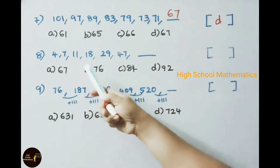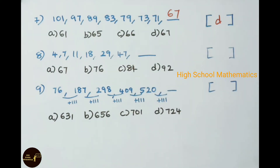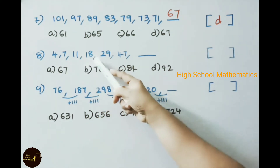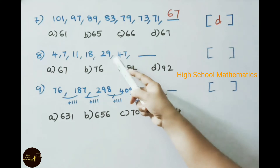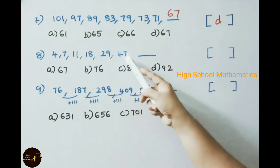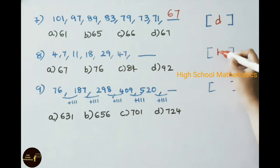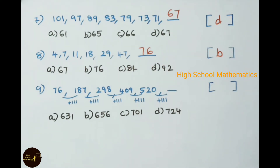Eighth practice problem: 4, 7, 11, 18, 29, 47 — find the next term. It is a Fibonacci series: 4 plus 7 is 11, 7 plus 11 is 18, 11 plus 18 is 29, 18 plus 29 is 47, and 29 plus 47 is 76. The answer is option B, 76.